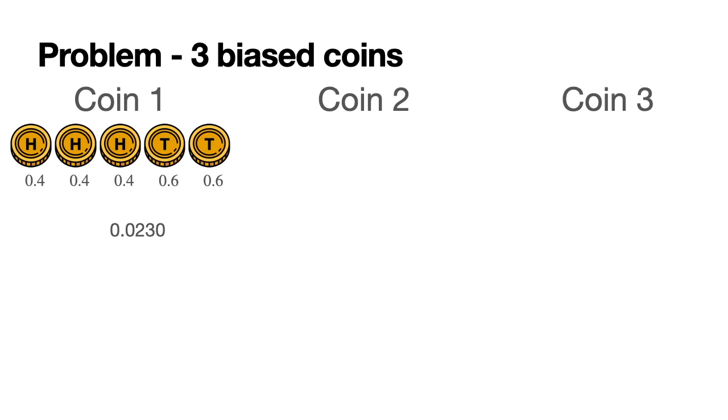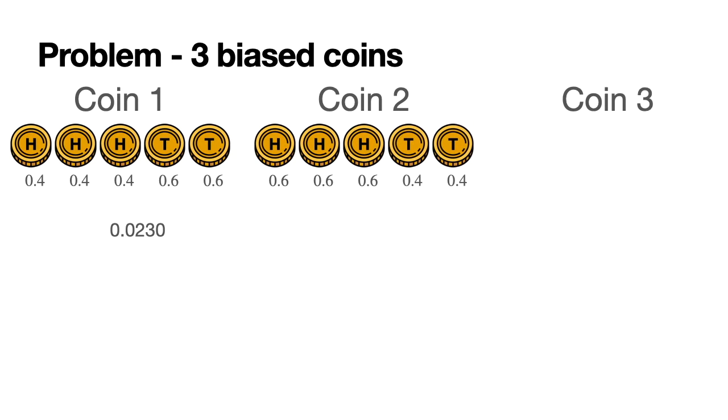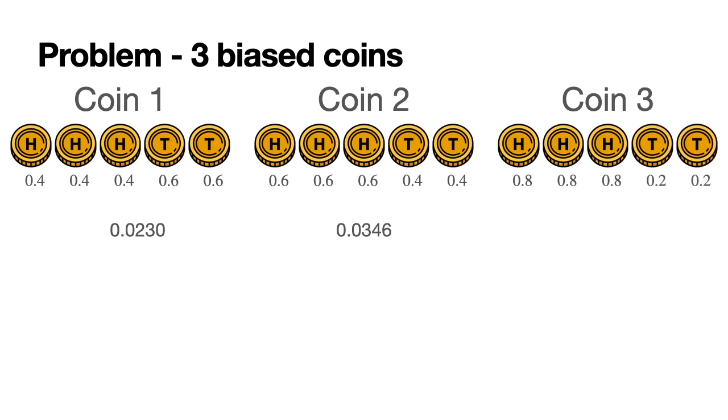For coin two, we do the same thing. The probability of landing in heads is 0.6. The probability of landing in tails is 1 minus 0.6, which is 0.4. And the product of all these is 0.0346. And now we do it for coin three. So it's 0.8 for the probability of heads, 0.2 for the probability of tails. The product is 0.0205.